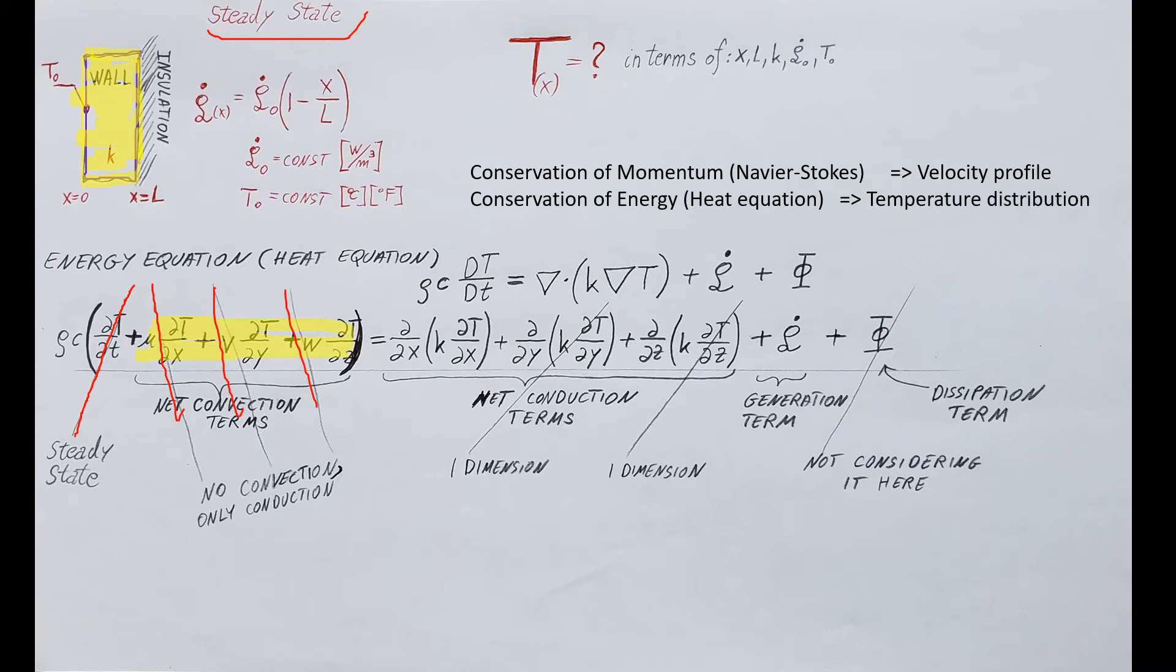In this large heat equation, these three terms are the convection terms, and since we are not dealing with any convection we're gonna have only the conduction, therefore we can cross them out. Let's take a look at the next terms. We are dealing with one-dimensional conduction, and that means that the temperature in this wall will vary only in the x direction.